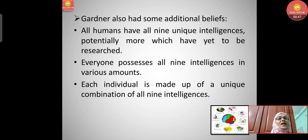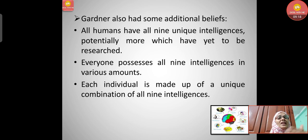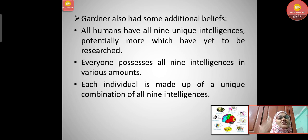Gardner also had some additional beliefs. All humans have all nine unique intelligences — and potentially more which have yet to be reached. Each and every individual has all nine intelligences, but not every person can reach the maximum level of all of them. If someone reaches all nine at a high level, that would be an extraordinary person.